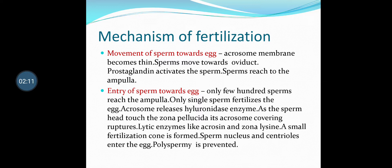Only a few hundred sperms reach the ampulla, and only a single sperm fertilizes the egg. The acrosome releases hyaluronidase enzyme. As the sperm head touches the zona pellucida, its acrosome covering ruptures. Lytic enzymes like acrosin and zona lysine are released. A small fertilization cone is formed. The sperm nucleus and centrioles enter the egg. Polyspermy — entry of many sperms into the egg — is prevented.